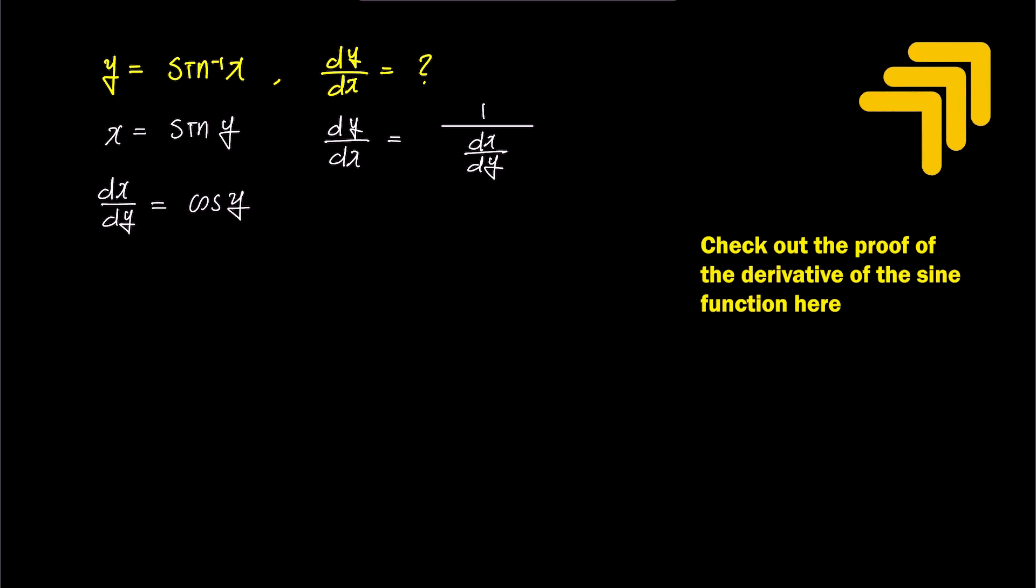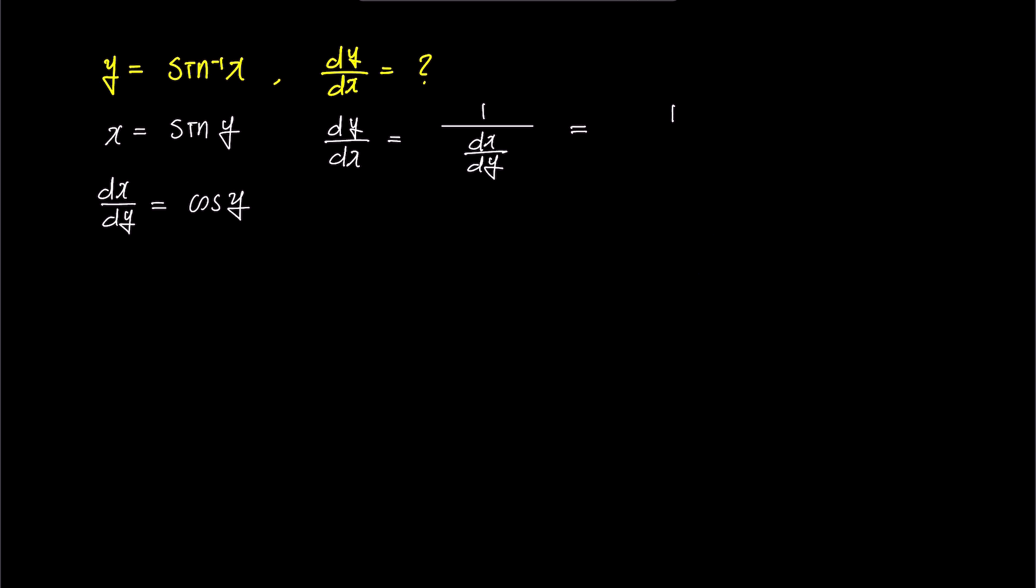Now, we can substitute this expression for dx dy into the equation we found, and dy over dx can be expressed as 1 over cosine y.